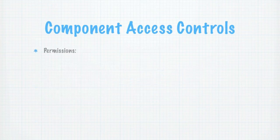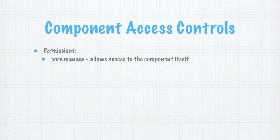With that explained, there is a small set of core permissions that Joomla handles natively. Core.manage is the permission that grants you physical access to the component. If you don't have the Core.manage permission, you will not be able to access the component from the backend at all — it won't even appear under the component menu.